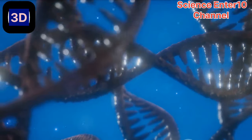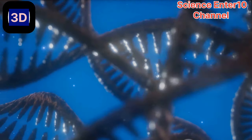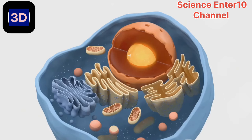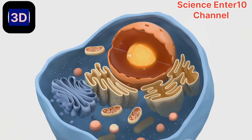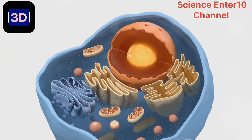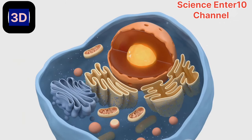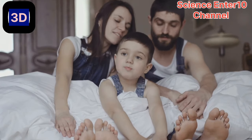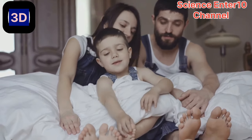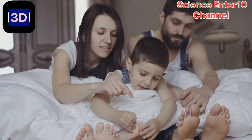During telophase, the chromosomes, now at opposite ends of the cell, start to unwind. As they relax, a new nuclear membrane begins to form around each set, creating two separate nuclei within the same cell. This is like the cell setting up two separate rooms for the newly formed chromosome sets.